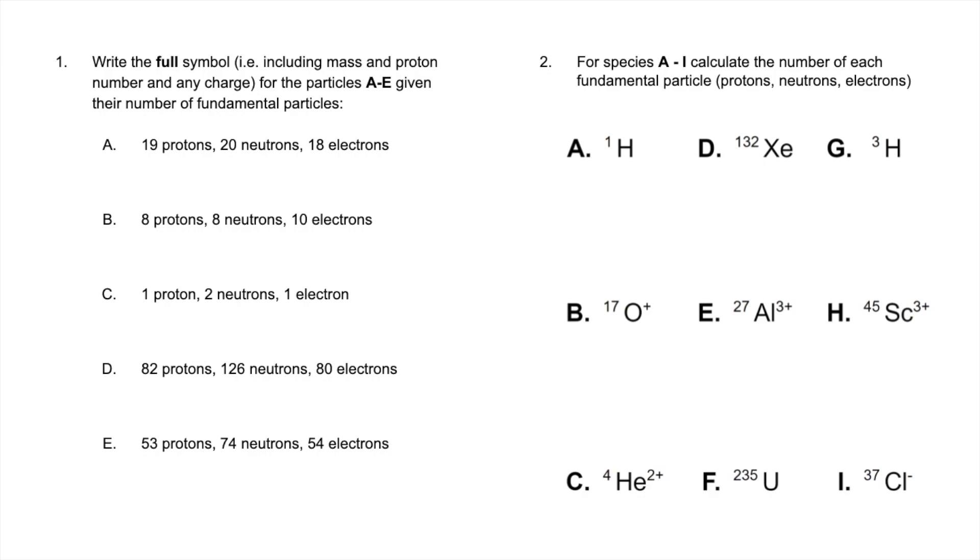So for the first question, we've got to write the full symbol. So obviously, the symbol for the element and the mass number and proton number and any charge from that information. So I would start with the protons. 19 protons, that tells you what we've got. So this is potassium.